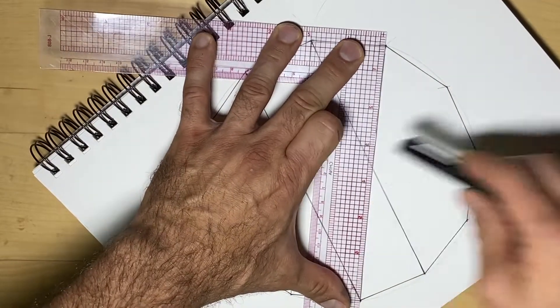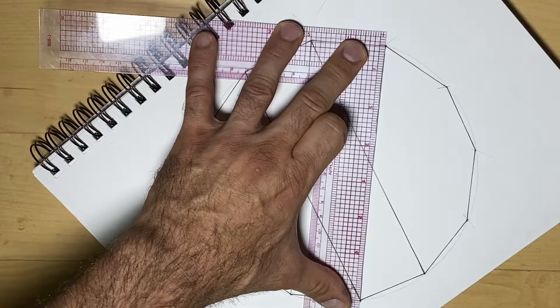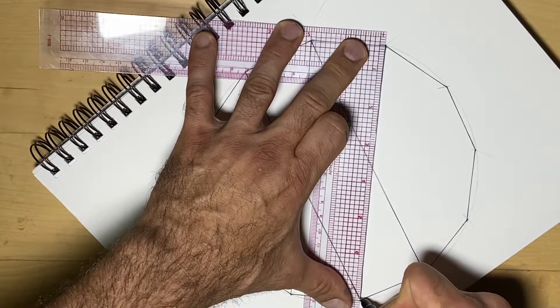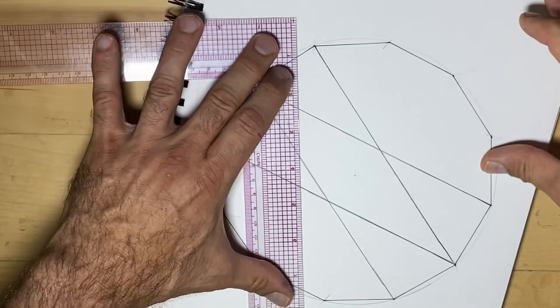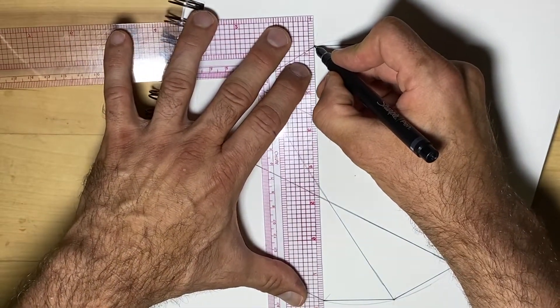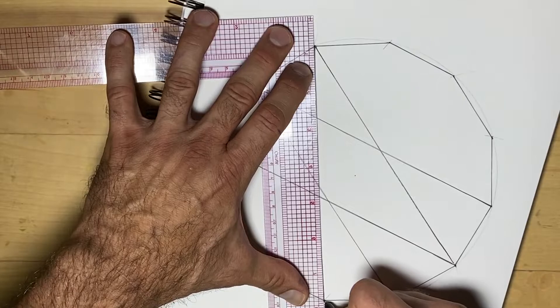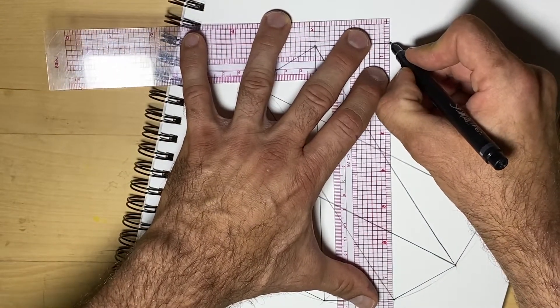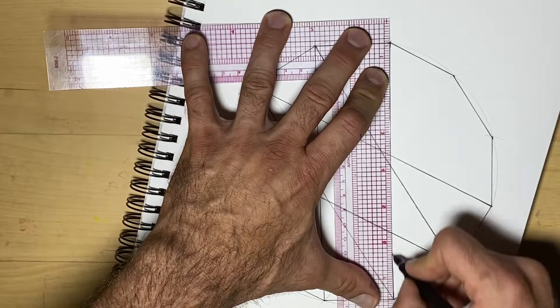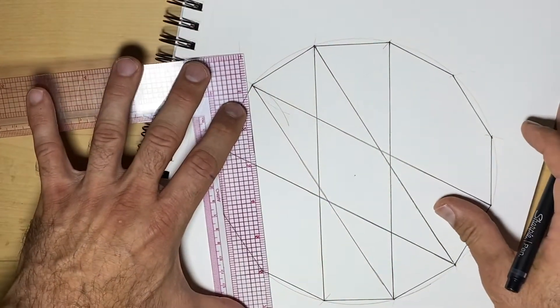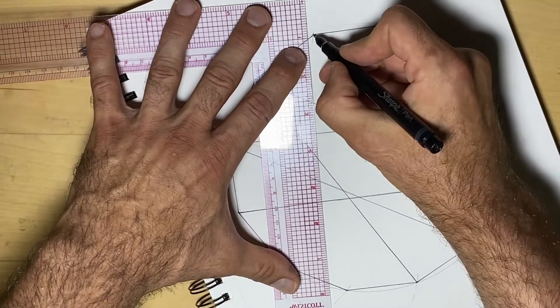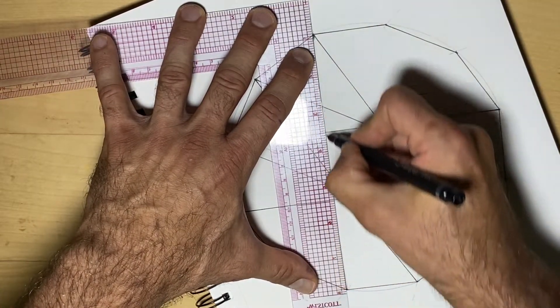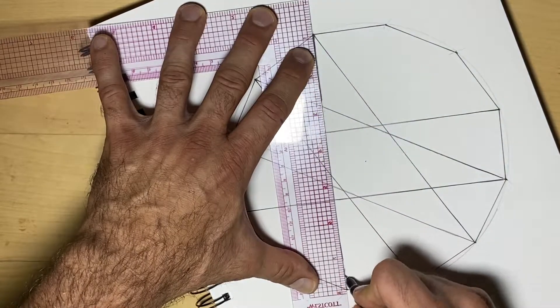And it seems my marker is running out. Let's see if I can find one with a little bit more ink. Then I'll rotate it again. I find that doing it this way is a little bit easier to teach and to understand it.